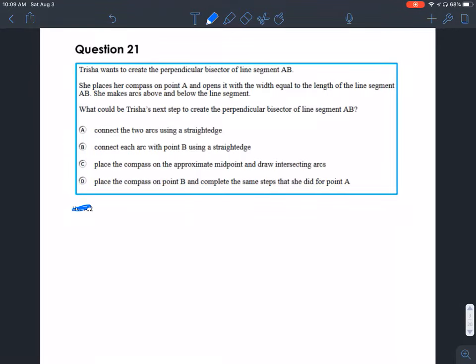Question number 21 from the 2019 Geometry End of Course Test in Ohio. Tricia wants to create a perpendicular bisector of segment AB. She places her compass on point A and opens it with a width equal to the length of line segment AB. She makes arcs above and below the line segment.